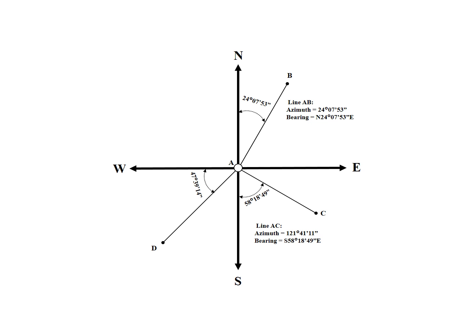Now for line AD. The given angle WAD is the angle measured from west of 47 degrees, 39 minutes, 14 seconds. Therefore, the azimuth can be calculated by subtracting this angle from 270 degrees. The resulting azimuth of line AD is 222 degrees, 20 minutes, 46 seconds.